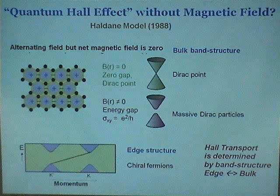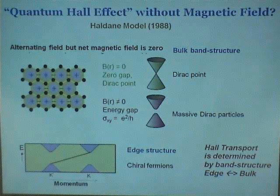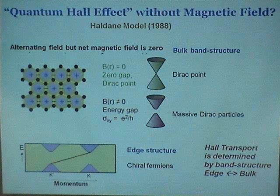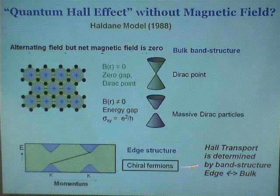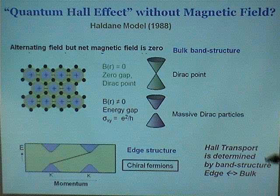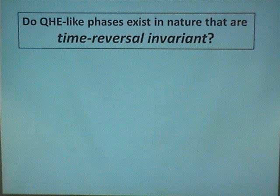Experimentally, suppose somehow the Haldane model is realized. How does one know from experiments that it really is the Haldane model? I propose two things. First, one can do a transport measurement and see that the Hall conductivity is plus or minus one. But having Hall conductivity plus or minus one does not prove it's the Haldane model. One really has to look microscopically at what the electrons are doing — the edge structure. So direct imaging of the edge structure is critical, and one has to combine Hall transport with this direct imaging. This is the bulk-edge correspondence.